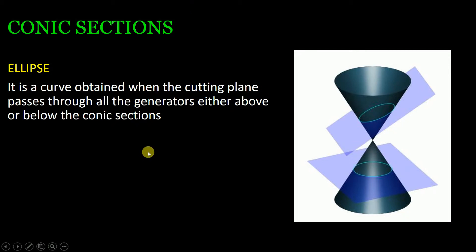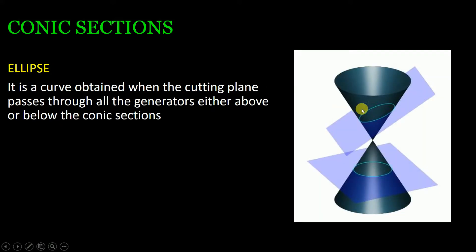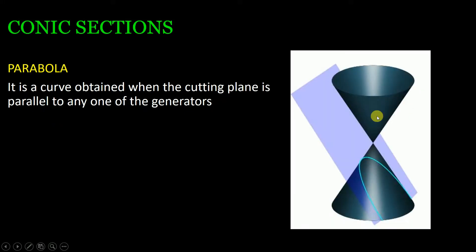Circle is a special kind of ellipse. What is a circle? It is a curve obtained when the cutting plane passes through all the generators and is horizontal. The difference between ellipse and circle: to generate an ellipse, you keep the cutting plane at an inclination to the horizontal, whereas for a circle you keep the cutting plane totally horizontal.